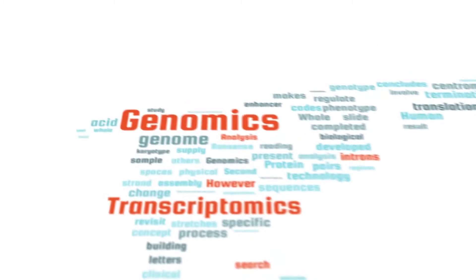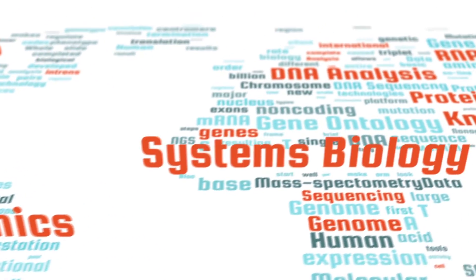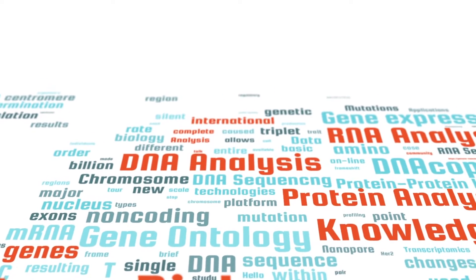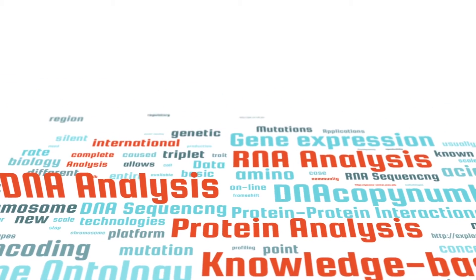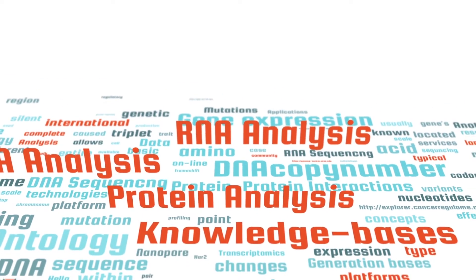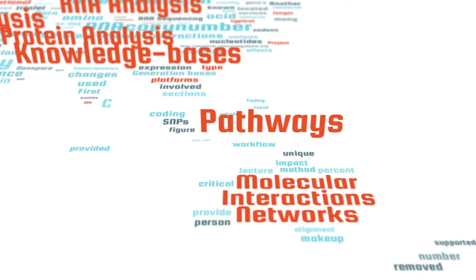This course covers seven major types of biological data in genomics, transcriptomics, proteomics and systems biology, including data types generated from DNA analysis, RNA analysis and protein analysis, as well as biological knowledge bases, pathways and networks.